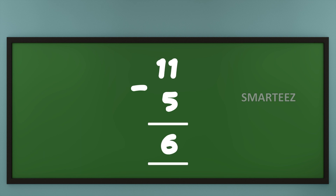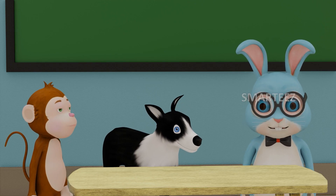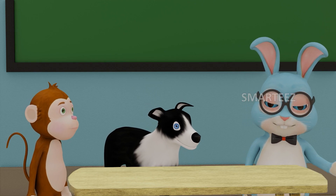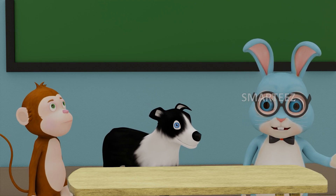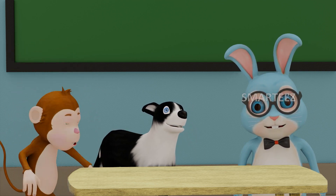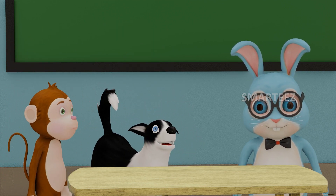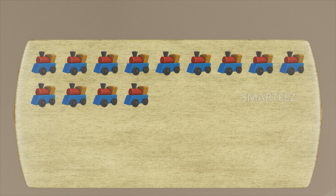That's where subtraction comes in. Let's do another one. This time I'm gonna split toy trains between Byra and Rangu. Let's see how many toy trains we have here on the table.